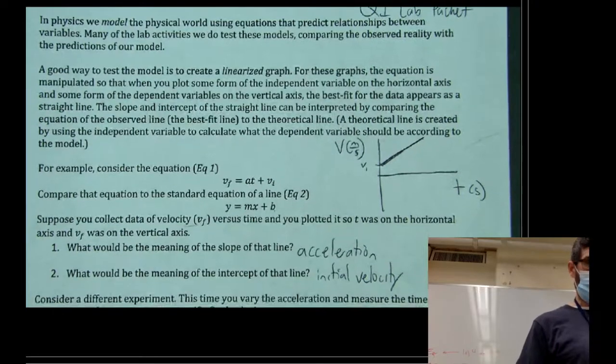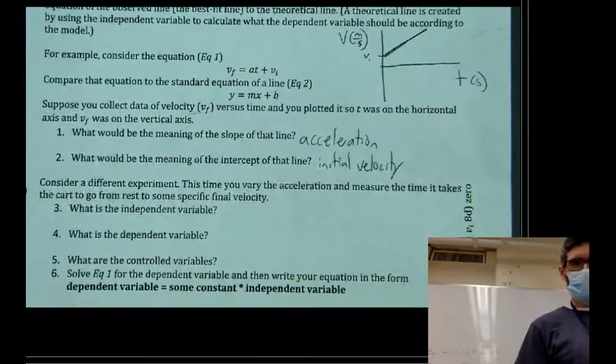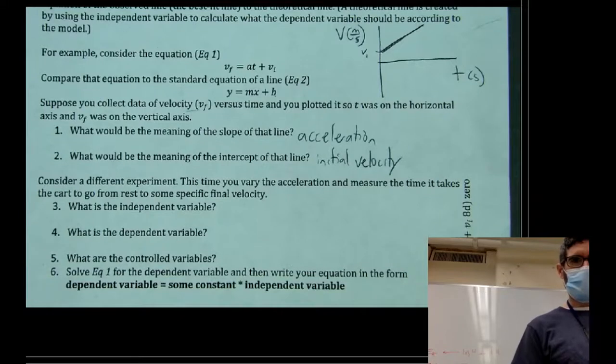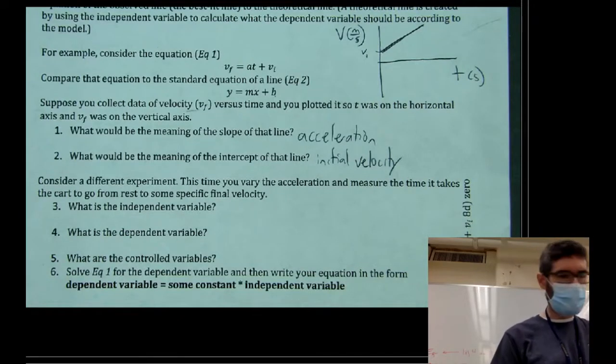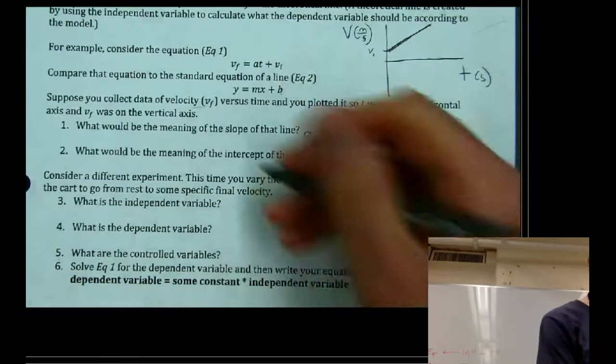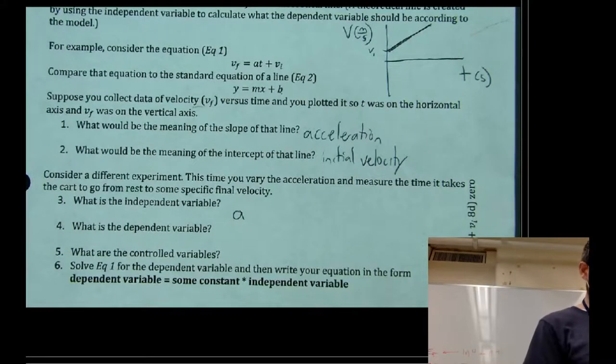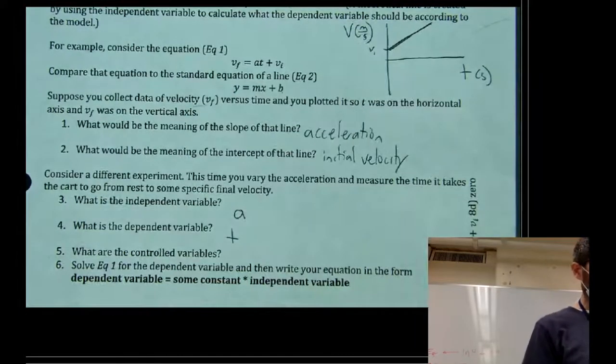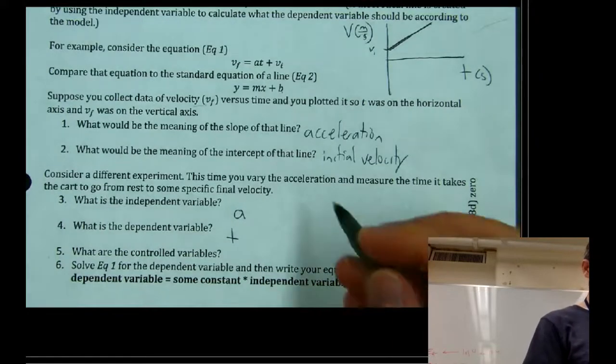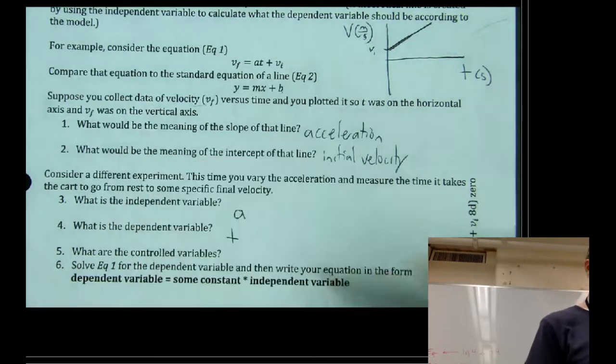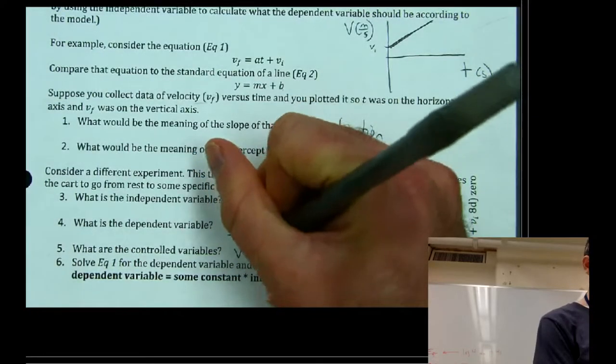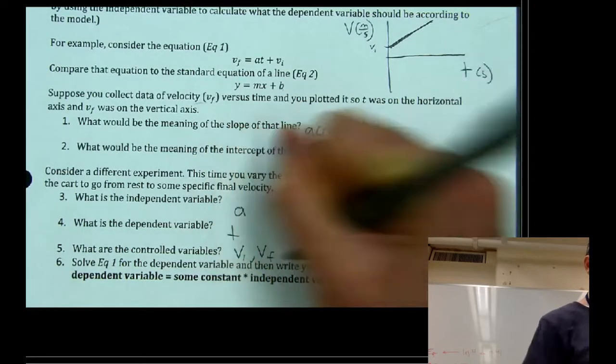So let's try another experiment. This time we're going to vary acceleration and measure the time it takes for a cart to go from rest to some specific final velocity. All right. So in this case, our independent variable, the thing we're varying is acceleration. Our dependent variable, the thing we're measuring the effect on is the time it takes to go from rest to a specific final velocity. So if we have a specific final velocity, we're going to keep consistent for all the different values of the independent variable we're going to use. It's always going from rest. Our controls are going to be initial velocity and final velocity.